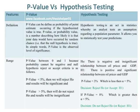P-value can be defined as the probability of a point estimate occurring if the hypothesized value is true. P-value, or probability value, is a number describing how likely it is that your data would have occurred by random chance such that the null hypothesis is true. In simple words, p-value is the observed level of significance.